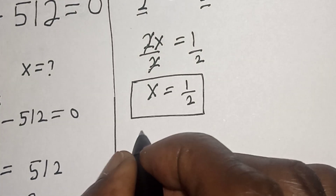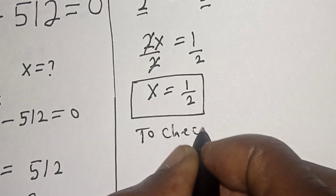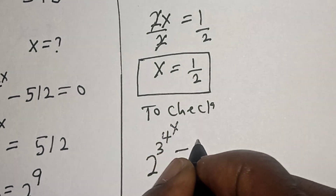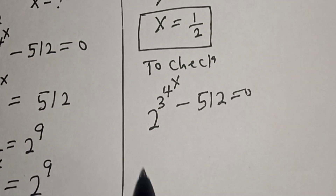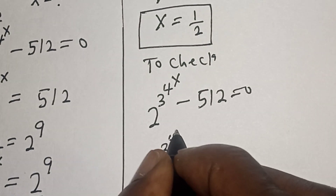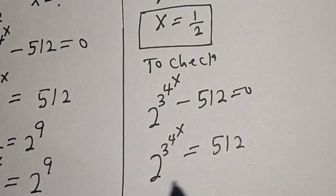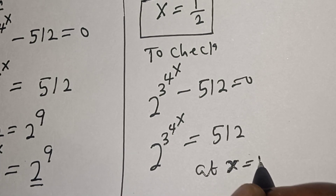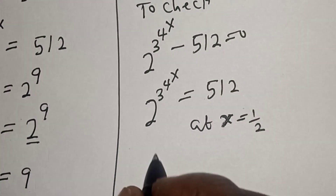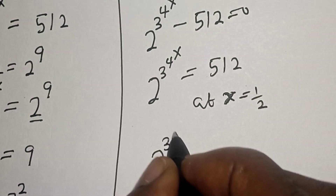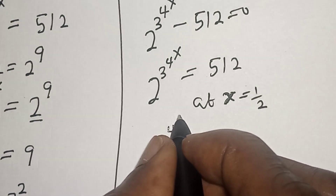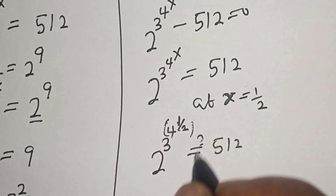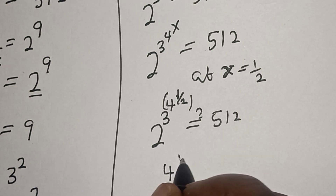We can check to confirm if our answer is right. Given the equation 2 to the power of 3 to the power of 4 to the power of x, minus 512, equals 0 — this means 2 raised to the power of 3 raised to the power of 4 raised to the power of x equals 512. Now at x equal to 1 over 2, let's start with 4 raised to the power of 1 over 2.